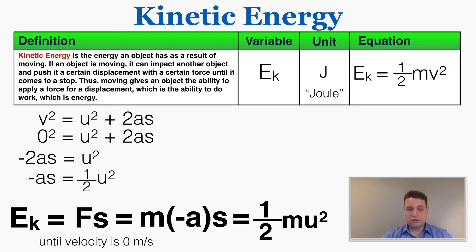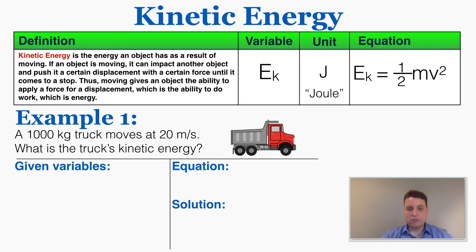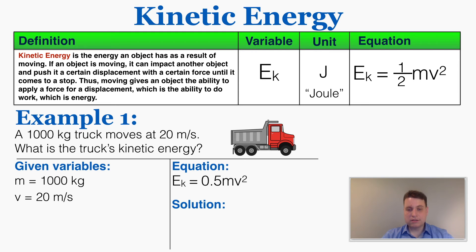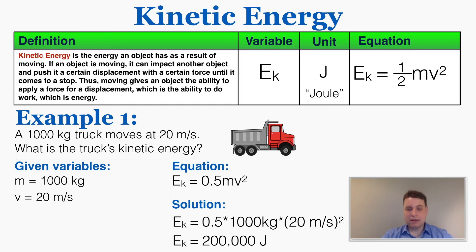Here are a few examples showing how to use the kinetic energy equation. A 1,000 kilogram truck moves at 20 meters per second — what is the truck's kinetic energy? I'm given mass = 1,000 kg and velocity = 20 m/s, and the equation is ½mv². Plugging in: one half times 1,000 times 20 squared equals 200,000 joules.